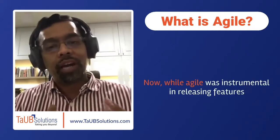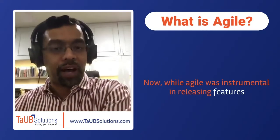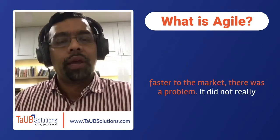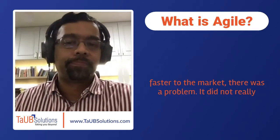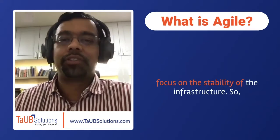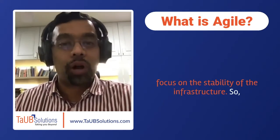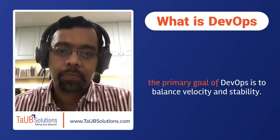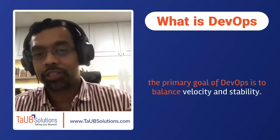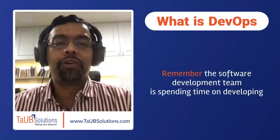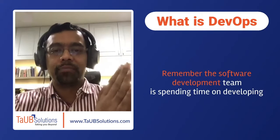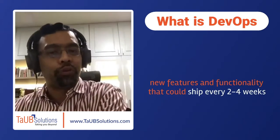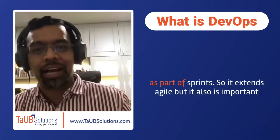While Agile was instrumental in releasing features faster to the market, there was a problem: it did not really focus on the stability of the infrastructure. So what is DevOps? The primary goal of DevOps is to balance velocity and stability. The software development team is spending time developing new features and functionality that could ship every two to four weeks as part of a sprint. DevOps extends Agile, but it also ensures that the system is stable.